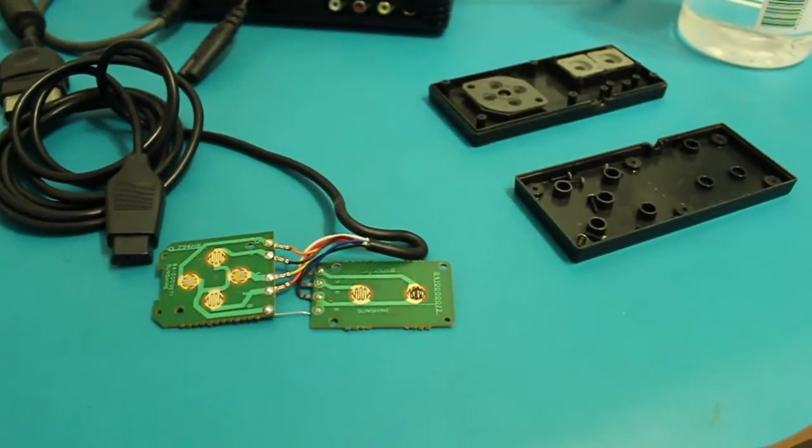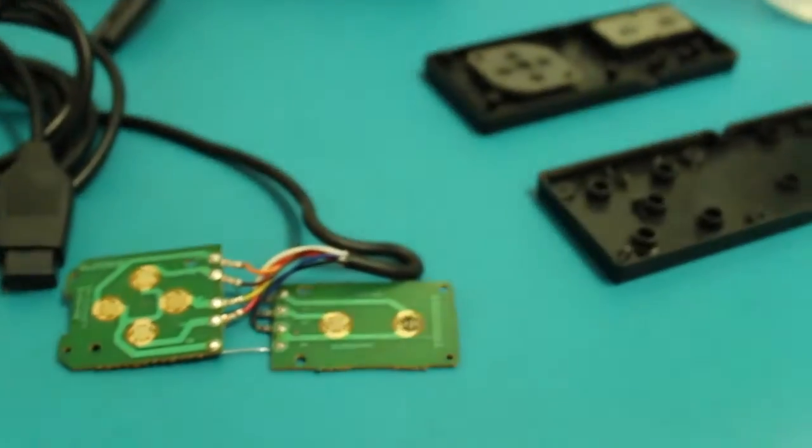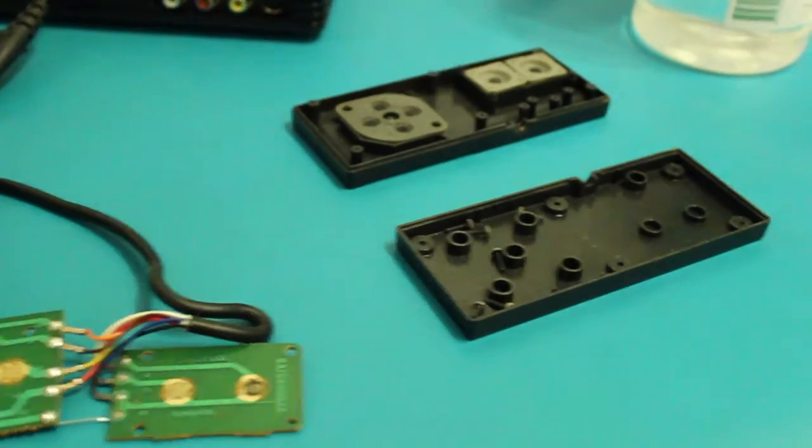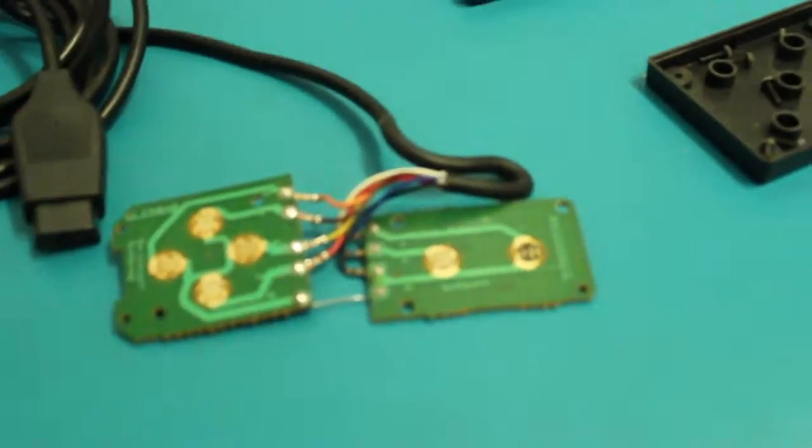The many joys of retro repair. Here today we have a pretty simple one. We've taken apart a Master System controller because one of the buttons, button 2 as they call it, was very unresponsive.